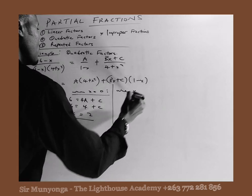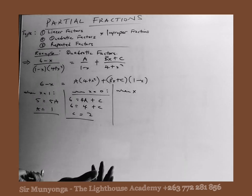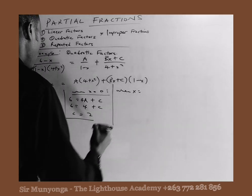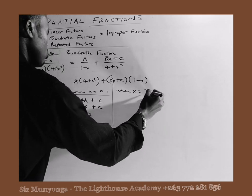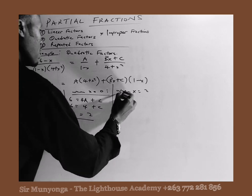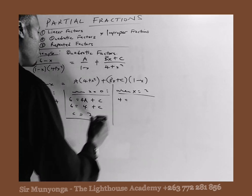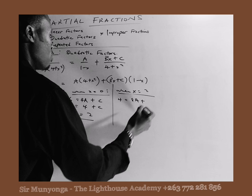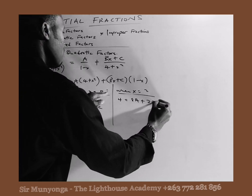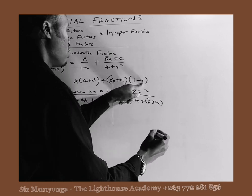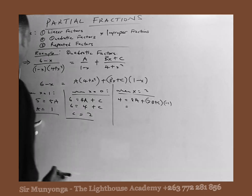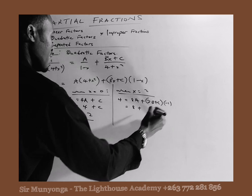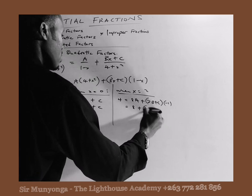Lastly, we can take any remaining value of x since we now know A and C and only need B. Let's use x equals 2. The left-hand side becomes 6 minus 2, which is 4. On the right-hand side, the quadratic factor gives 4 plus 4, which is 8, so we get 8A. The linear term gives 2B plus C, multiplied by (1 minus 2).